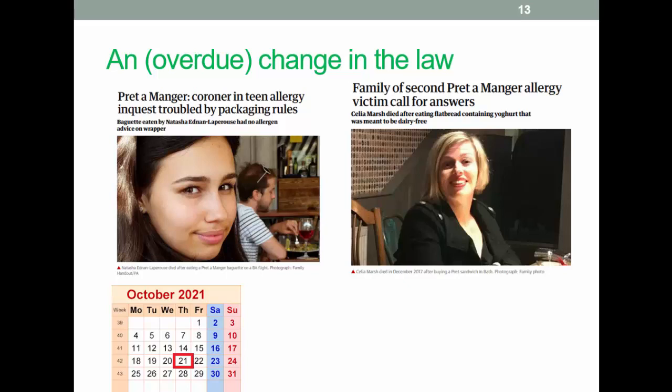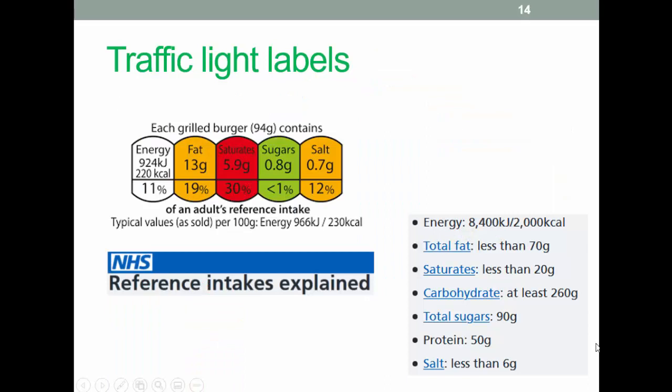Pret a Manger was involved in two allergen-related deaths in 2018. In neither case was allergen information offered to the customers. Pret changed its policies after the second death, and UK legislation will require allergen labeling from the 21st of October 2021 — hopefully not delayed further by the current situation. Click the link for news articles on those stories.